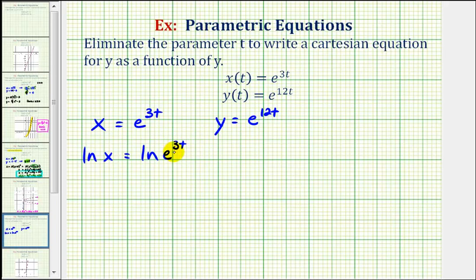And now we can apply the power property of logarithms on the right side. We can move this exponent to the front of the natural log. So now we have natural log x equals this would be three t times natural log e.